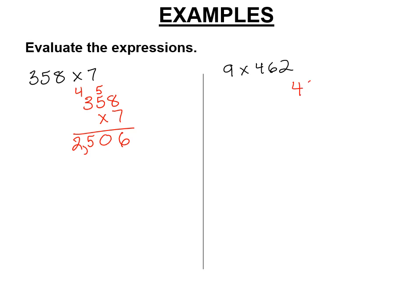So I'm going to put the one with more digits, the 462, on the top. 9 times 2 is 18. Carry the 1. 9 times 6 is 54, plus 1 is 55. Carry the 5. Notice I'm lining up my columns here. That's going to be important as we get bigger and bigger. 9 times 4 is 36, plus 5 is 41, I believe. And then this is 4,158.